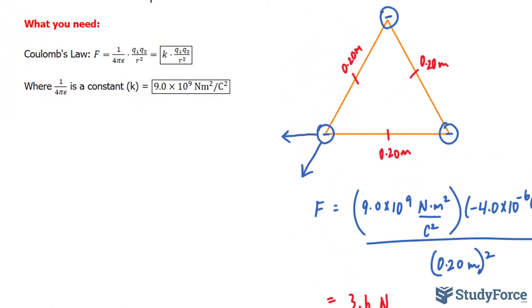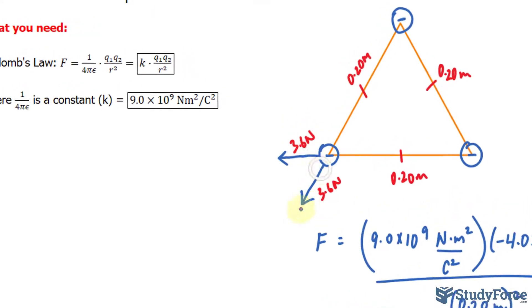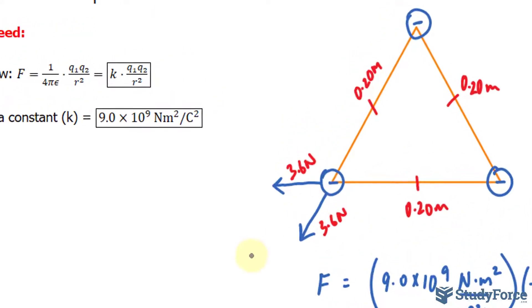So that is the force that occurs between these two charges and these two charges, and they are happening here and they're happening here. So we need to find the resultant vector of these two blue vectors.